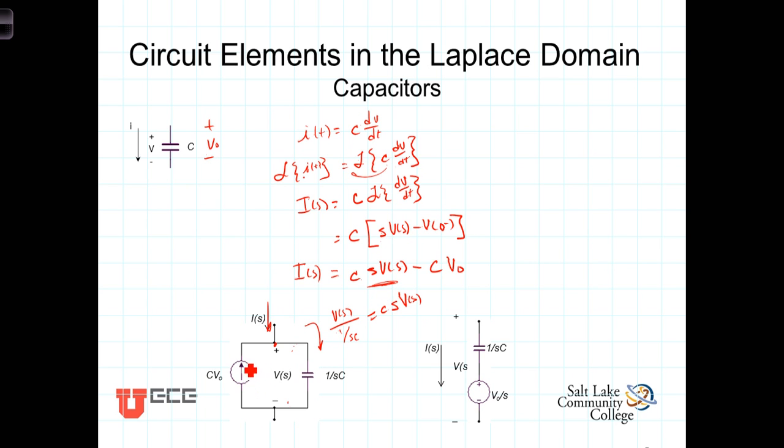And then we have flowing into the node a current comparable or equal in value to C times V0. So this parallel structure consisting of a current source whose value is the value of the capacitor C times the initial voltage on the capacitor in parallel with the capacitor whose value is 1 over s times C.